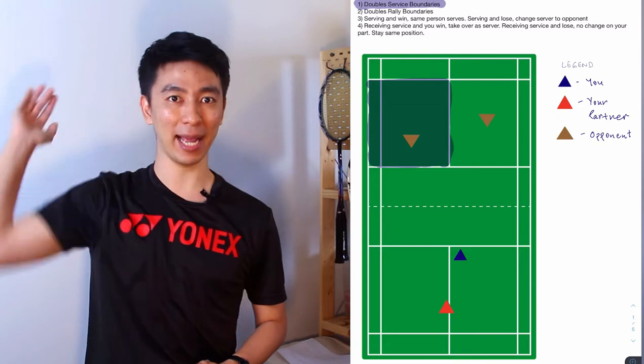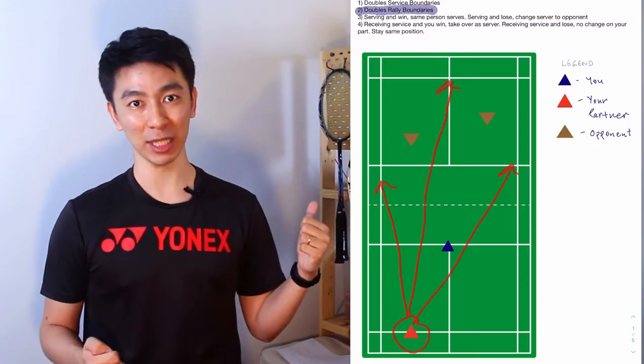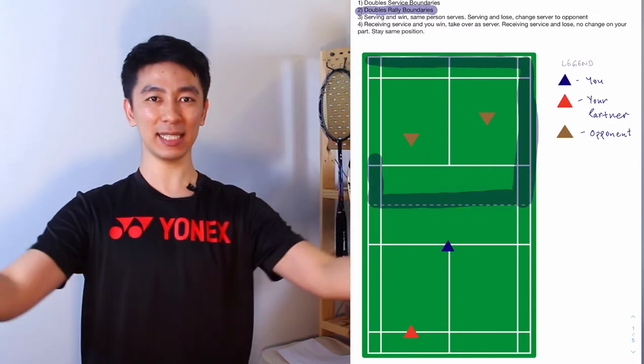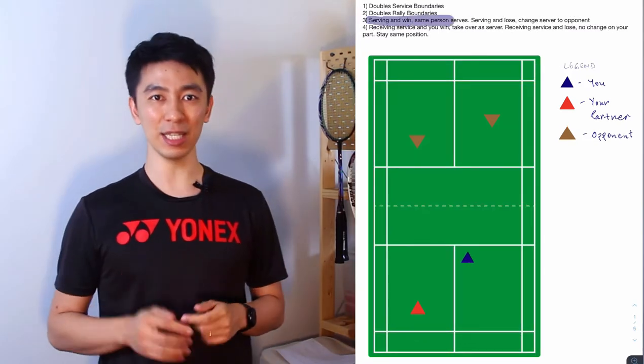For the doubles rally gameplay, if your partner behind you is the one smashing, you can smash anywhere in this highlighted boundaries. It includes the sideline and the backline.